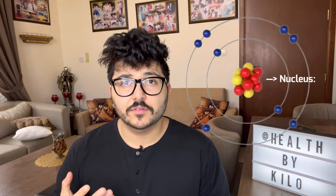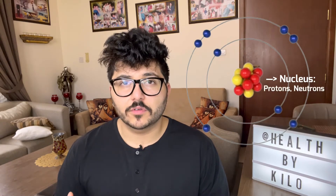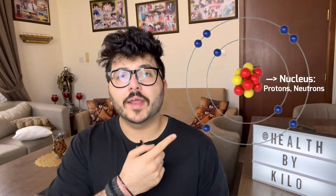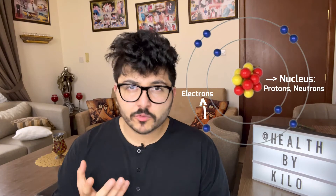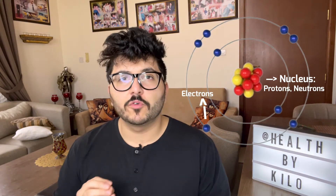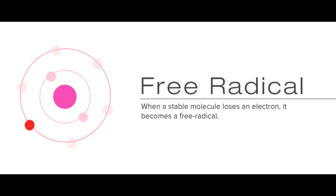Here is an oxygen molecule. What you see in the middle is the nucleus — which contains neutrons and protons. And the bars around it are the electrons. There are about 7 types of free radicals. Free radicals are unstable — why? Because one of their electrons is impaired or is missing.